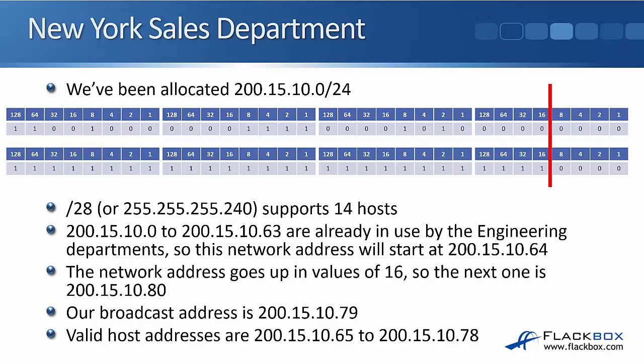So let's look at the answer. We need to support 14 hosts. The smallest possible subnet we can use is a slash 28. Slash 28 means we've got four bits available for host addresses, so that's 2 to the 4 = 16, minus 2, that gives us 14 hosts. 200.15.10.0 to 200.15.10.63 were already being used by the engineering departments, so the network address that we'll start with here is 200.15.10.64.